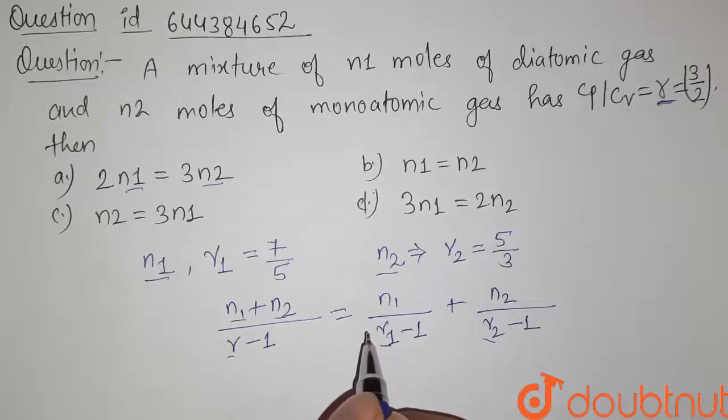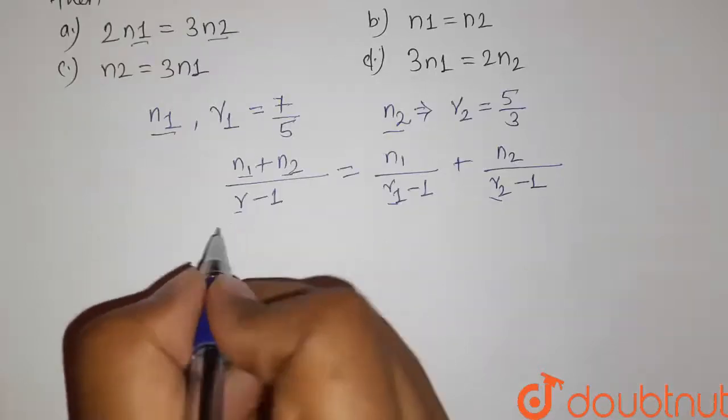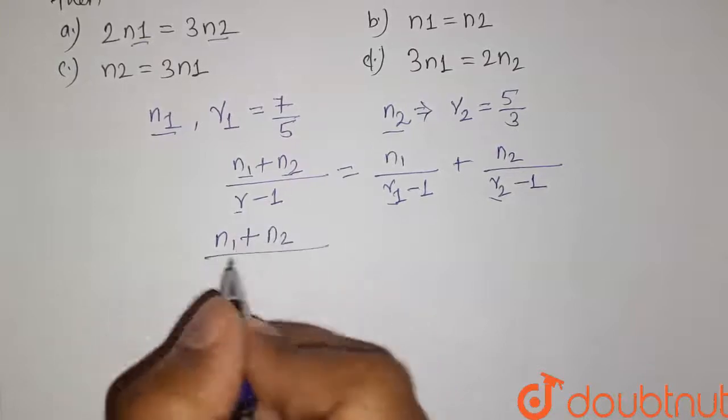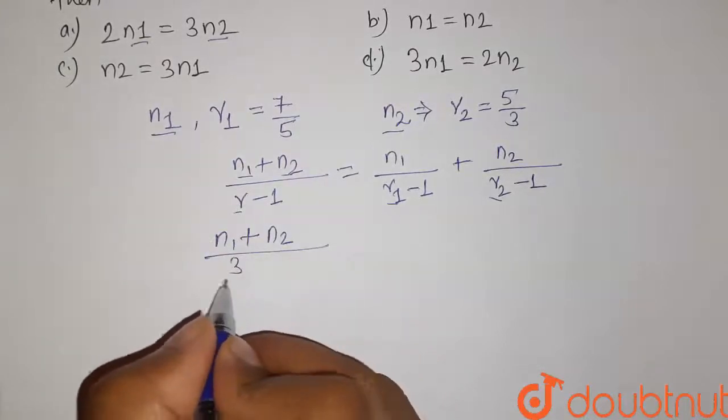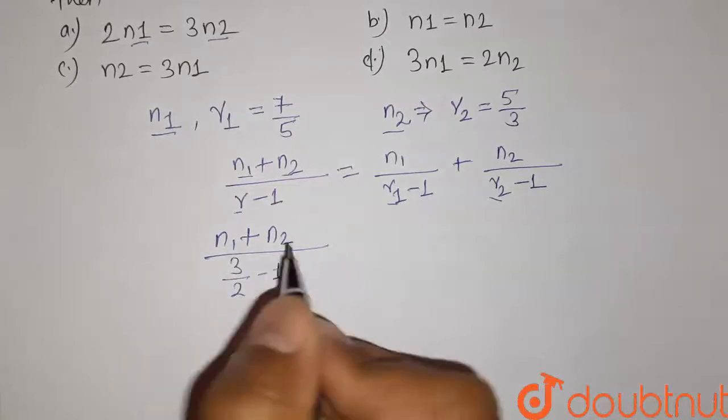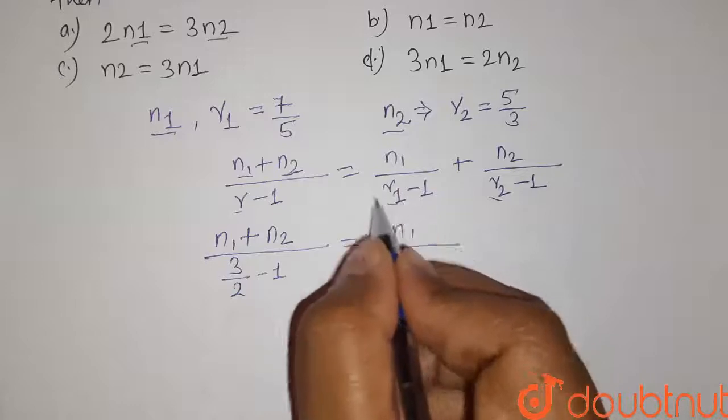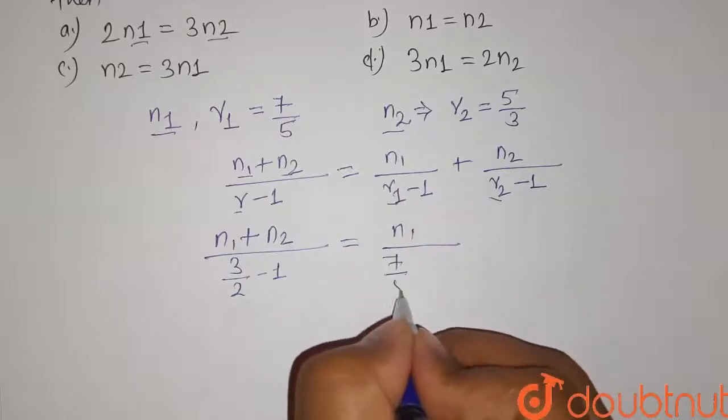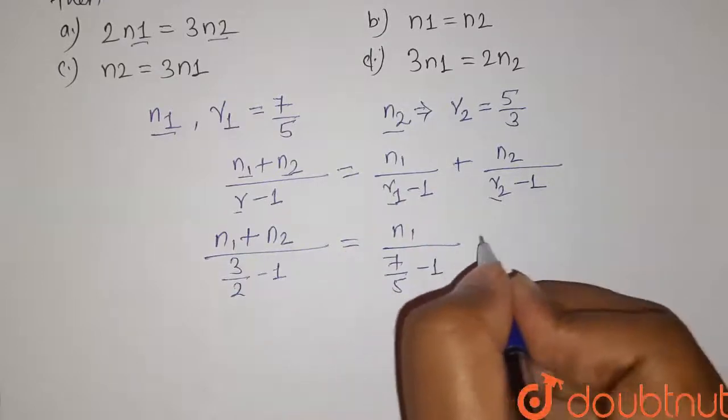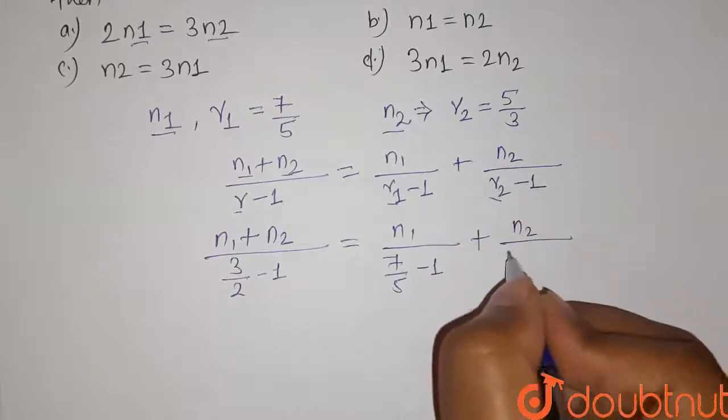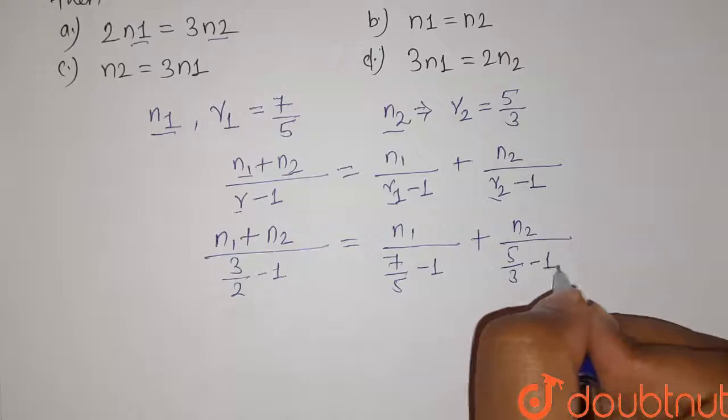So (N1 + N2) divided by gamma, which has the value 3/2 minus 1, equals N1 divided by gamma 1, which is 7/5 minus 1, plus N2 divided by gamma 2, which is 5/3 minus 1.